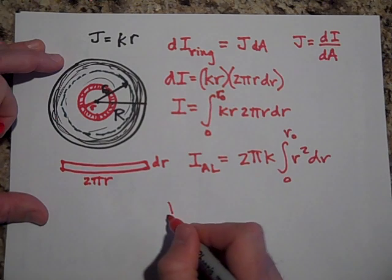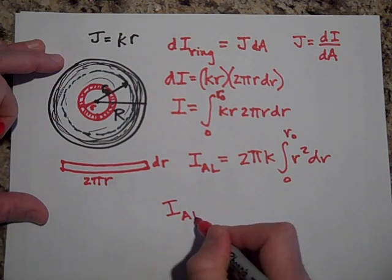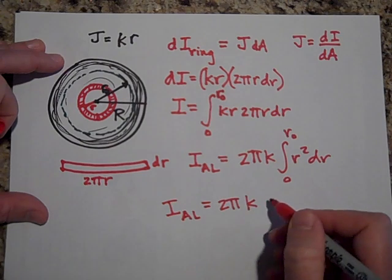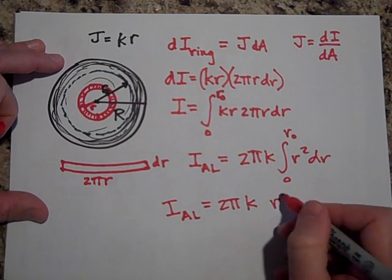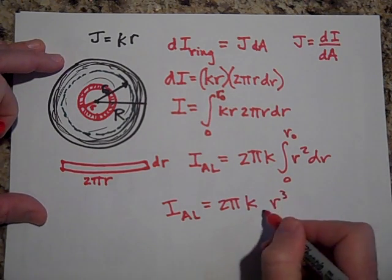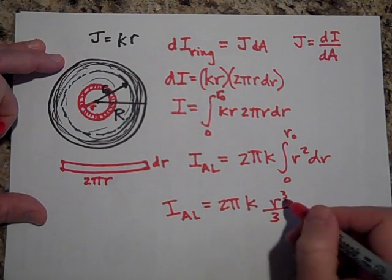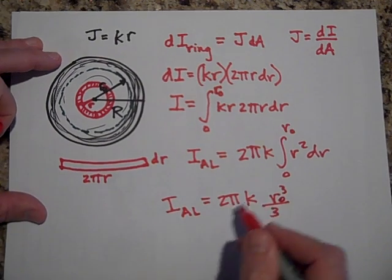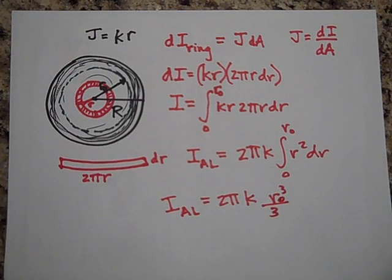And so, when I do that integral, I'm going to get that it's 2πK, and this is going to be R³ over 3. And when I put in zero and R₀, I'm just going to get that. So, that's the I through the Amperian loop right there.